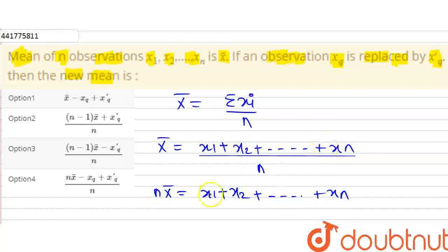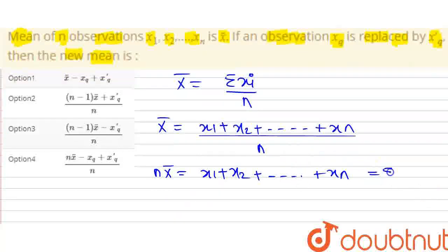This is x1 plus x2 plus dot dot dot till xn. So, this is the sum of all observations, which is n into x-bar. This is summation xi value.